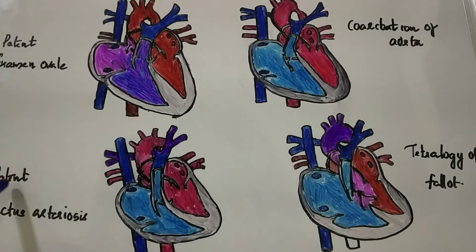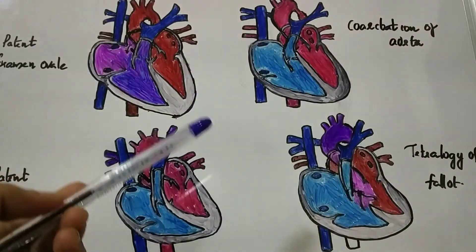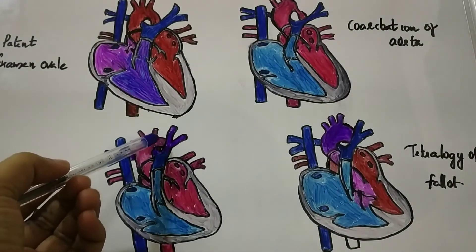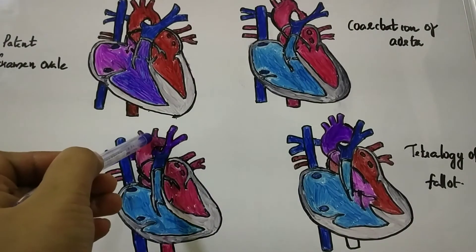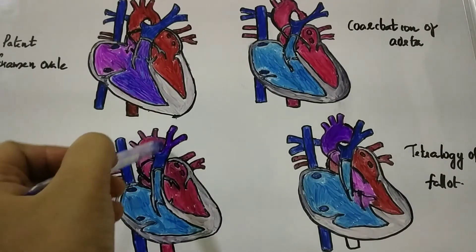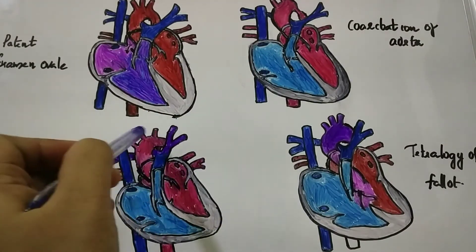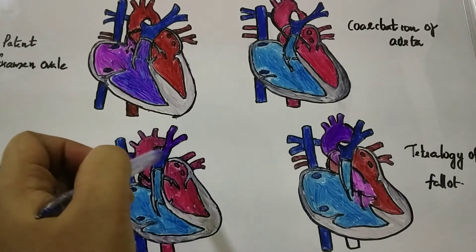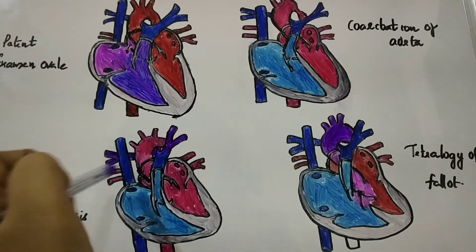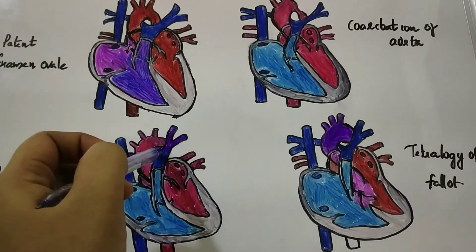Next is the patent ductus arteriosus. The ductus arteriosus is a blood vessel that connects the aorta with the pulmonary trunk, seen in fetal circulation to bypass pulmonary circulation. It closes immediately after birth, but if it does not close, this condition is called patent ductus arteriosus, and as a result blood from the aorta flows to the pulmonary trunk.